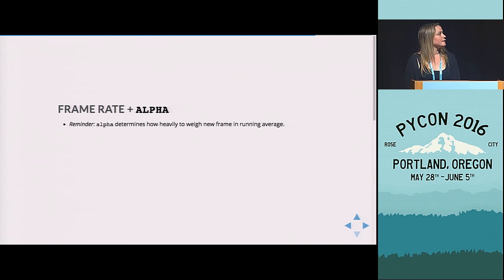And then so that was talking about the resolutions. Now thinking about frame rate. So frame rate is the number of frames per second that are going to be taken when you're running your camera. And so if you remember when we were creating that running average, we want to know how heavily to weigh in each new frame. Now, if you reduce your frame rate, that new frame is representing a longer period of time than it was previously.